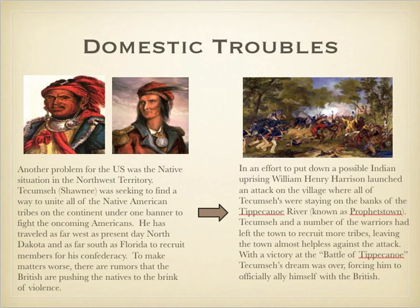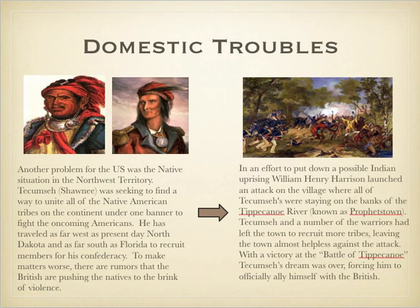One of the key figures in all of this is a Shawnee leader named Tecumseh. Tecumseh had really been working for most of his adult life on trying to unite all of the Native American tribes on the continent under one banner. He actually got this idea by studying the American Revolution and seeing how the 13 states united to fight England. He travels as far south as Florida and as far west as North Dakota to try and do this.